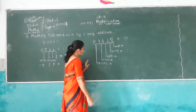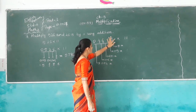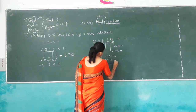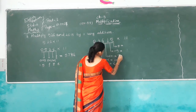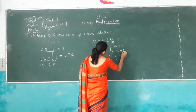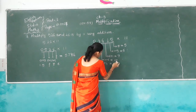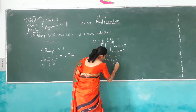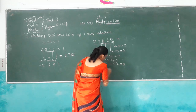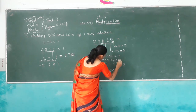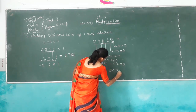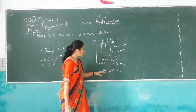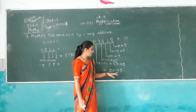Another one: 4,615 multiplied by 11. Write 0, 4, 6, 1, 5. Then 0 plus 4 is 4, 6 plus 4 is 10 — write 0 carry 1, 6 plus 1 is 7, 5 plus 1 is 6, carry 1, 5. So 1 carry over makes it 4 plus 1 is 5. We get answer 50,765.